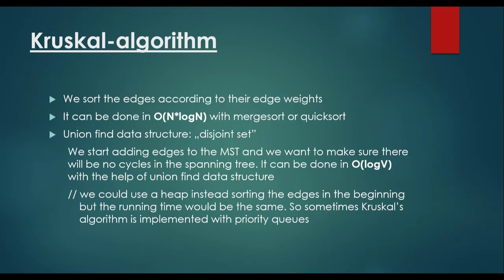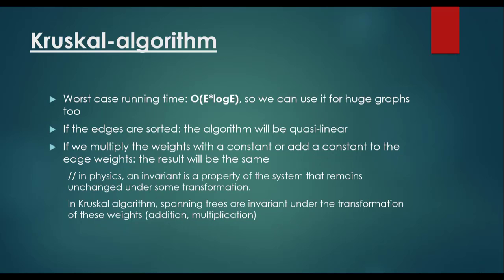We could use a heap instead of sorting edges upfront, but the running time is the same. Sometimes Kruskal's is implemented with priority queues. The worst-case running time is O(E log E), where E is the number of edges, so it works for huge graphs. If edges are already sorted, the algorithm is quasi-linear. Multiplying or adding a constant to edge weights doesn't change the result — minimum spanning trees are invariant under such transformations.